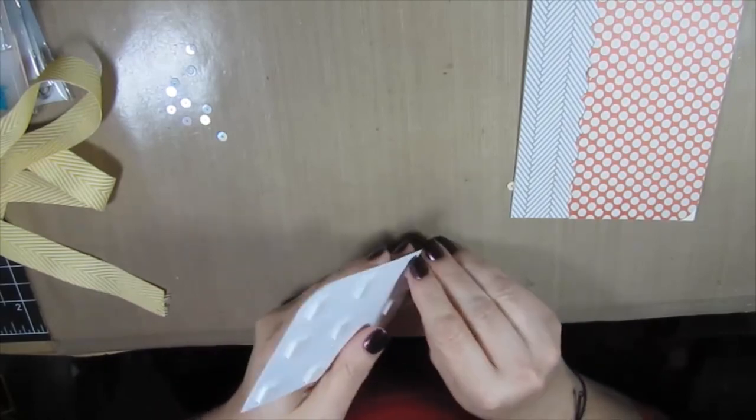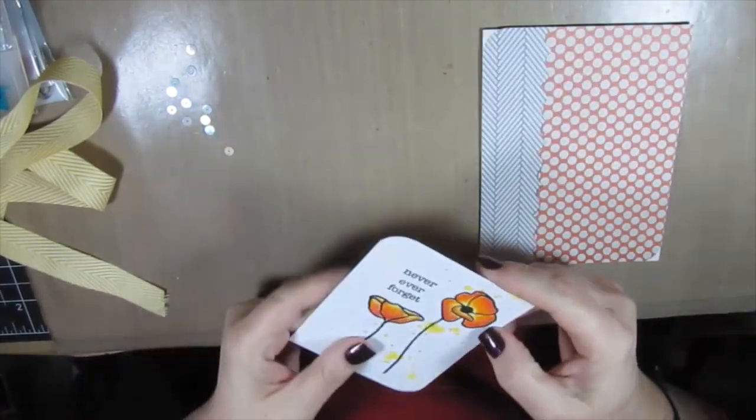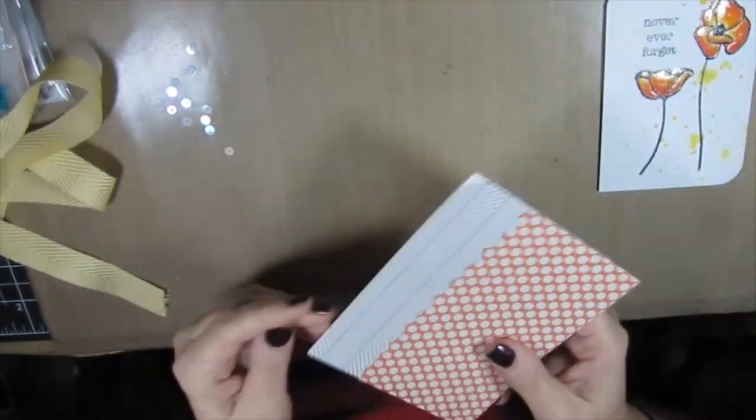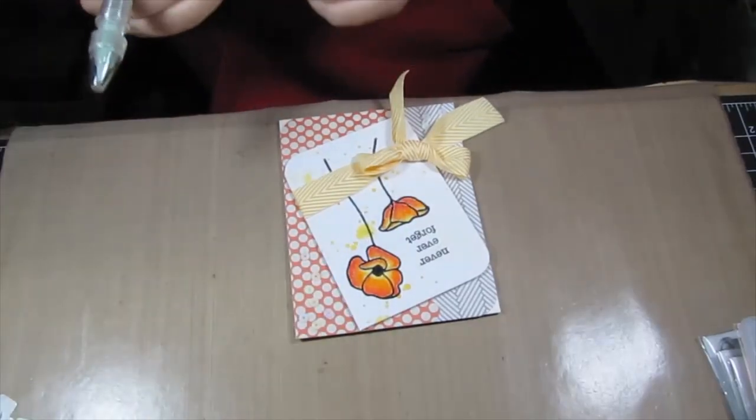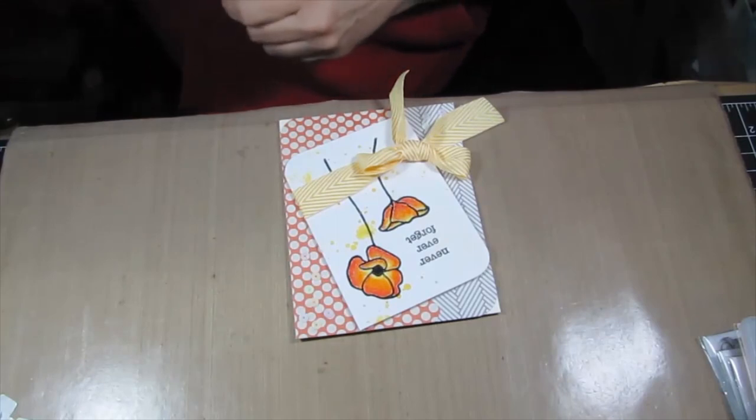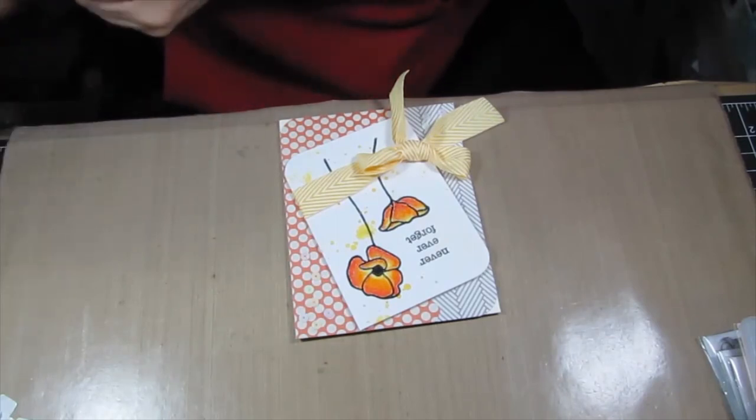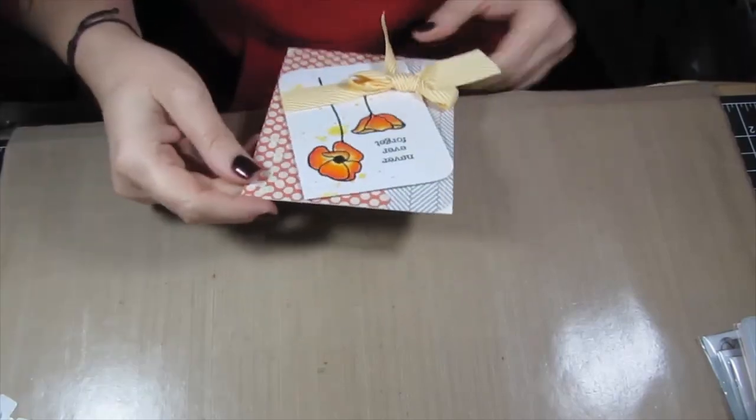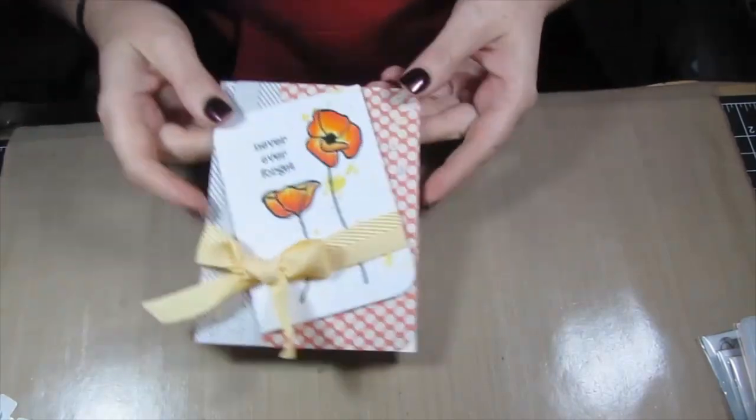Here's my finished card base. I just used a border punch on the polka dotted paper and laid it on top of the chevron looking paper, put my finished card panel on top of that, tied some ribbon around it, a couple of sequins, and that's my finished card.